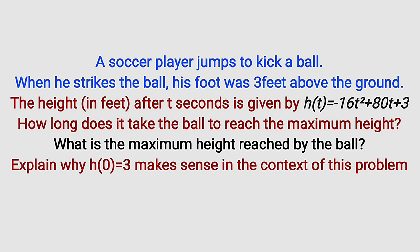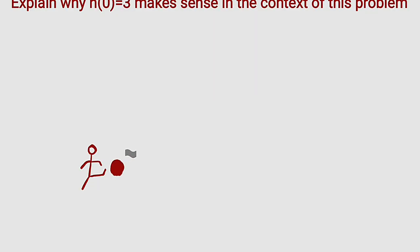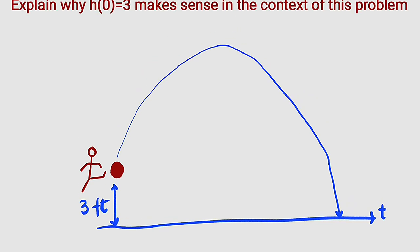For better understanding, let us make a sketch. Let's assume this is the boy who jumps to kick a ball and this is the ball right here. You should know that if this ball is kicked, it is going to go up, reach a maximum height and drop down. According to the question, the boy was 3 feet above the ground when he strikes the ball. So let's assume this is the ground level. He was 3 feet above.